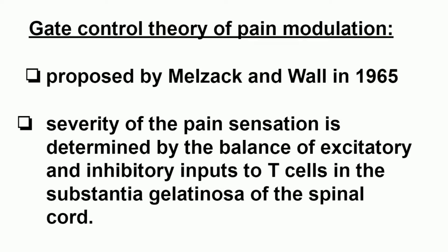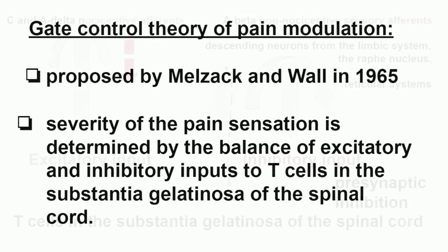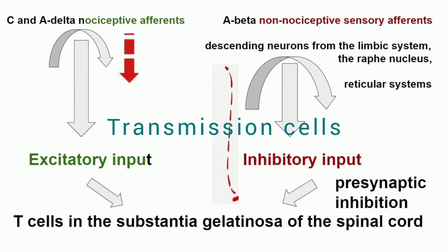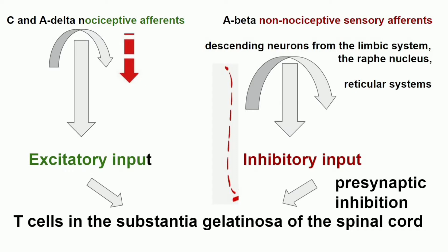As mentioned in the previous video, there is a spinal cord with a T-cell, that is nothing but a transmission cell. The T-cells receive impulses from C-fibers as well as A-delta fibers.